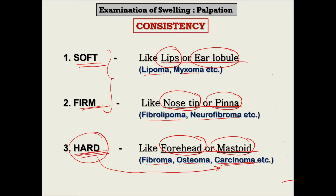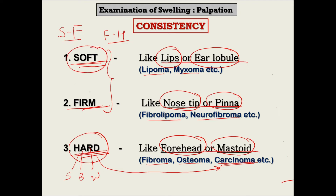Hardness has been further divided into categories like stony hard, bony hard, and woody hard, among others. However, in your viva, please avoid using terms like 'consistency is soft to firm' or 'firm to hard.' It is a subjective feeling and the same swelling may feel different to different persons, but these terms are usually not accepted by examiners. It is better to describe consistency only as soft, firm, or hard.